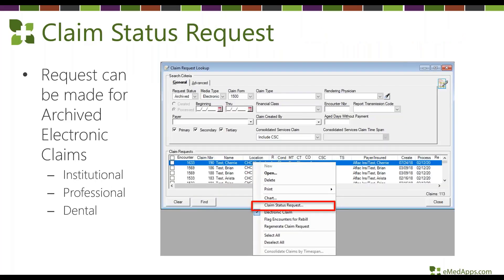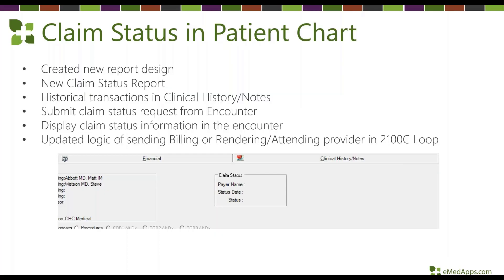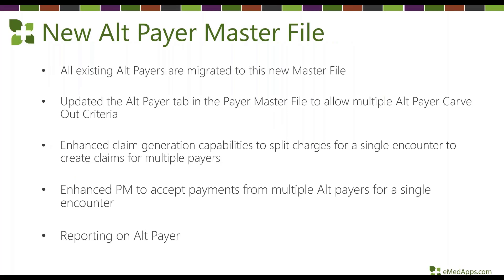Claim status request: if you set this up, you can perform a claim status check on archived electronic claims — this works for institutional, professional, and dental claims but not paper claims. There's a new report design and a brand new claim status report. The information is stored on the clinical history notes tab, you can submit right from the encounter, and from the patient chart general tab you'll see a snapshot of your current claim status.